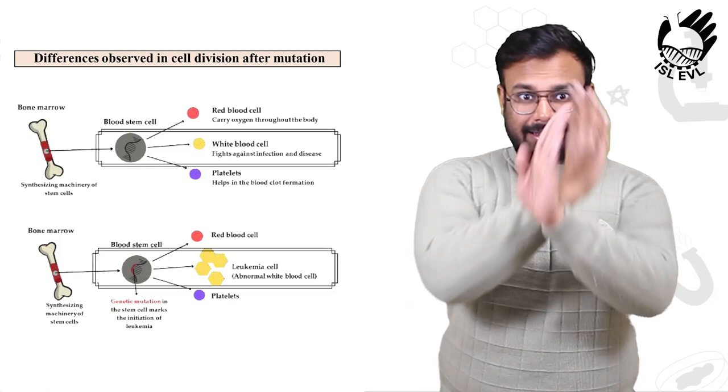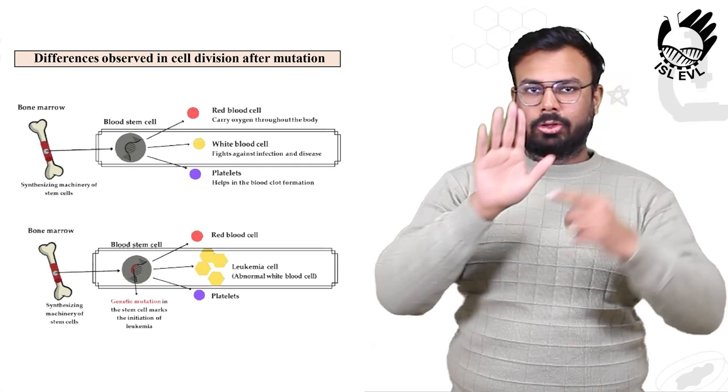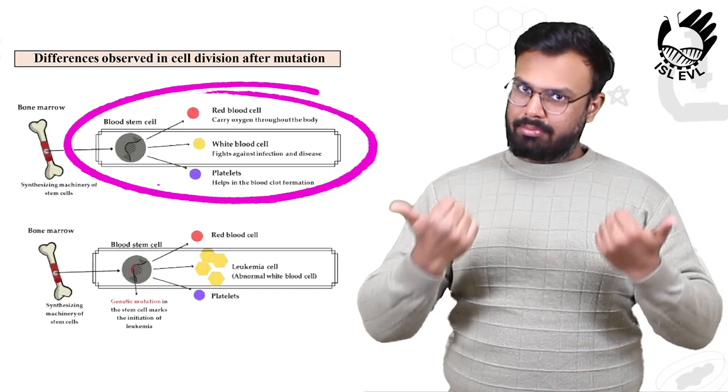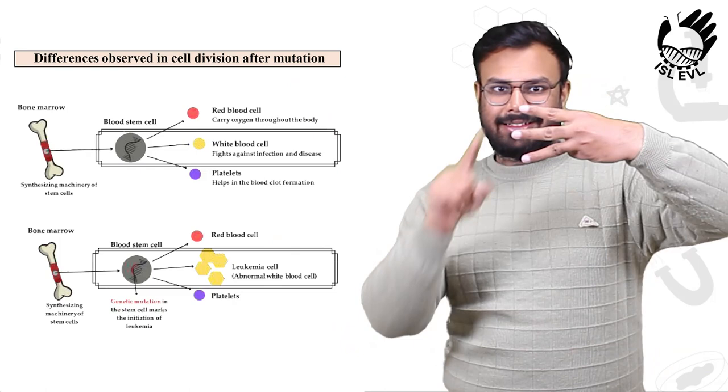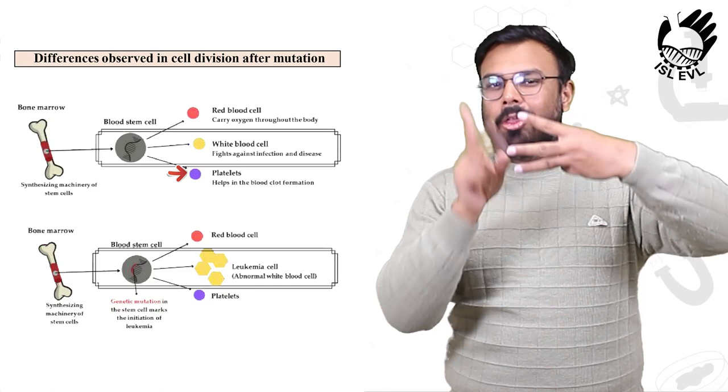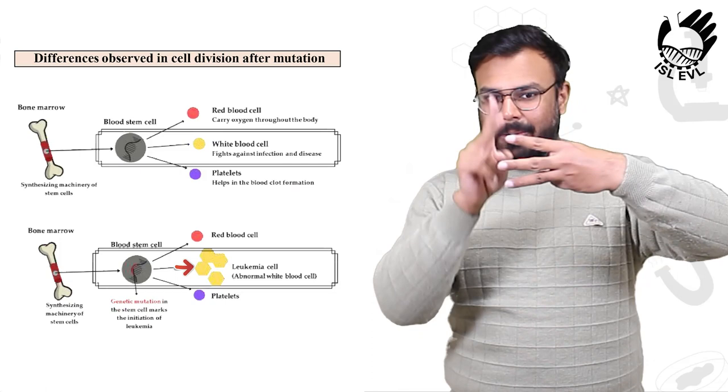Differences observed in cell division after mutations: There is a difference in those two pictures. In the first picture, there is one RBC, one WBC, and one platelet. WBC fight against infection and disease.